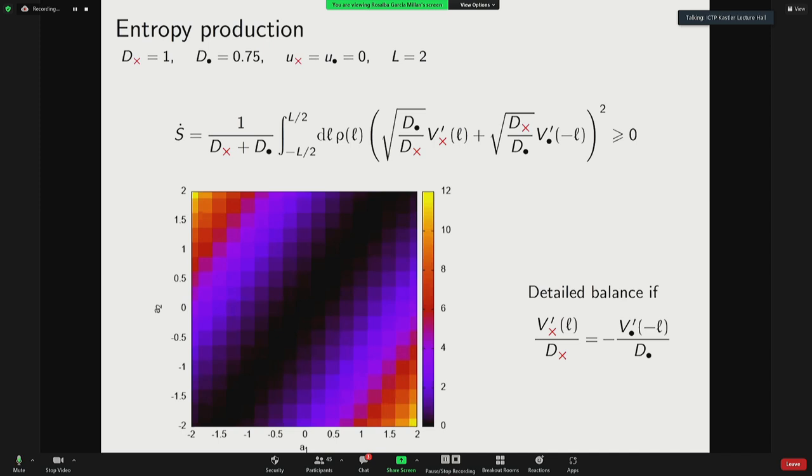We also calculated the entropy production. Here, everything is Markovian. There's nothing hidden. And so we can calculate the entropy production in closed form. What's most interesting is that we found this condition for detailed balance, which is also consistent with numerics. And what it tells us is that the case where one particle is chasing the other one is the furthest scenario from equilibrium.